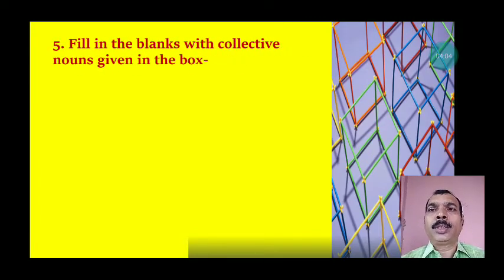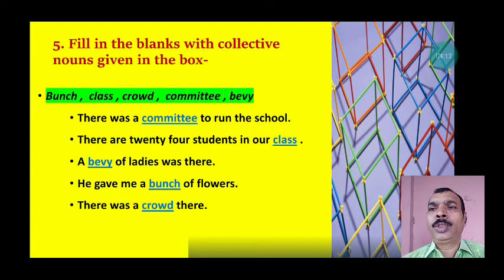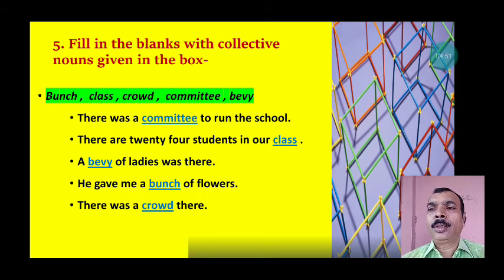Number 5: Fill in the blanks with collective nouns given in the box. Given collective nouns are: bunch, class, crowd, committee, baby. Sentences: 'There was a dash to run the school' — answer: committee. 'There are 24 students in our dash' — answer: class. 'A dash of ladies was there' — answer: baby. 'He gave me a dash of flowers' — answer: bunch. 'There was a dash there' — answer: crowd.